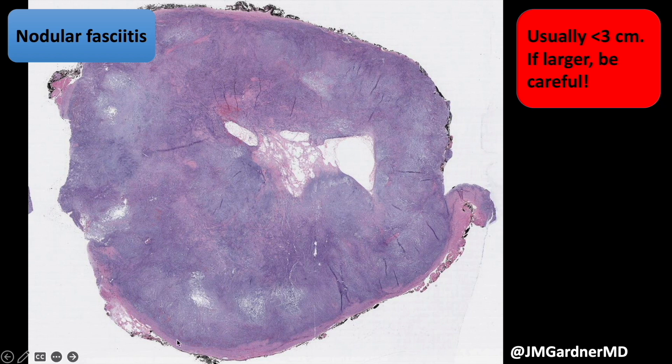Nodular fasciitis often arises off a fascia — you can see a strip of dense regular pink connective tissue; that's fascia, tendon, or ligament. The tumor can either push up into the subcutis, push down from the fascia into the muscle, or track along the fascia in a linear, spiky, stellate pattern — the so-called fascial pattern of nodular fasciitis. Those can be trickier to recognize, but usually it's a nodule pushing either up or down from the fascia.